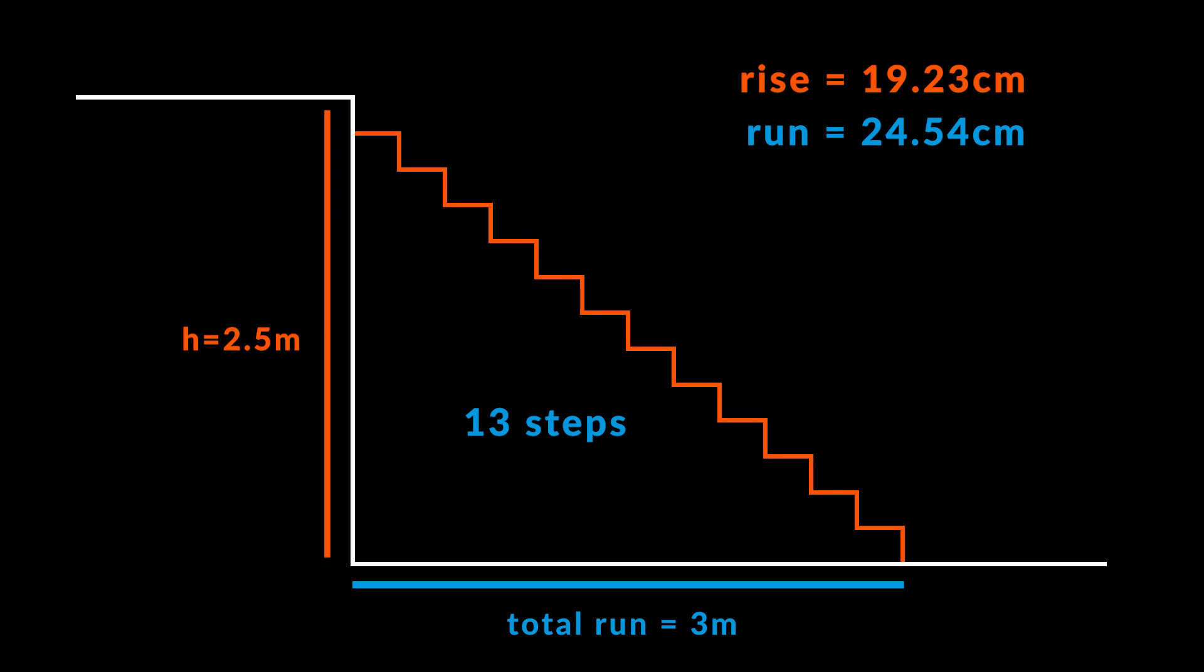Now let's imagine we didn't have enough space available and 3 meters was the maximum total run allowed for our stairs. We would then have to reduce the number of steps to 13 in order to have a slightly higher step rise and a smaller step run, but still having 63 for the Blondel formula, thus keeping the stairs comfortable and safe to use.